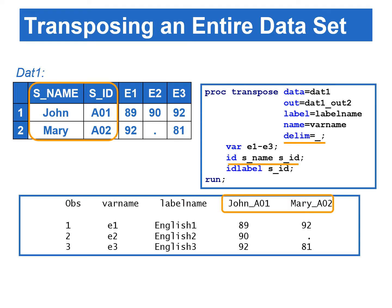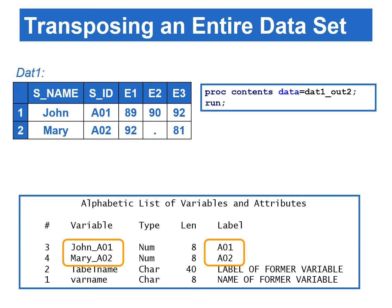We can use more than one variable in the ID statement. The S_name and S_ID variables are used in the ID statement, and the DELIM= option is also used. The transposed variable names are created by concatenating S_name and S_ID, separated by an underscore as specified by the DELIM= option. PROC TRANSPOSE also has an IDLABEL statement that uses values from a variable in the input data set to label the transposed variables. Using S_ID in the IDLABEL statement, the transposed variables SCORE_JOHN and SCORE_MARY are labeled with AO1 and AO2 respectively.